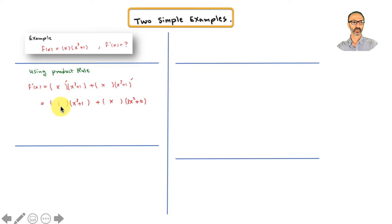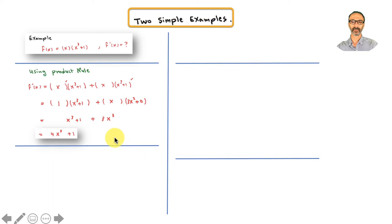The derivative of x is 1, and the derivative of x cubed plus 1 is 3x squared plus 0. Then simplify — everything is displayed on screen — and you get 4x cubed plus 1.